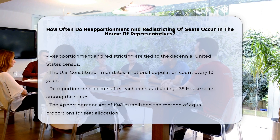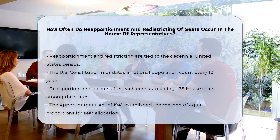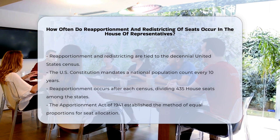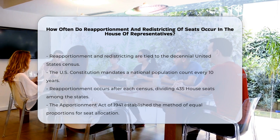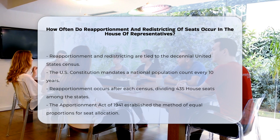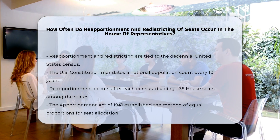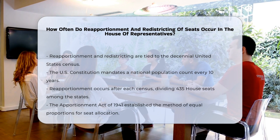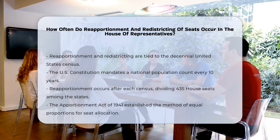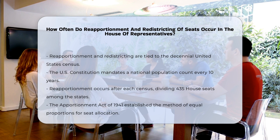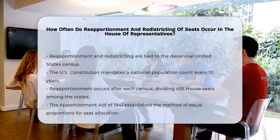The process of reapportionment and redistricting is closely tied to the decennial United States Census. The U.S. Constitution mandates that the national population be counted every 10 years, which is done through the Census. Following each Census, the process of reapportionment occurs.